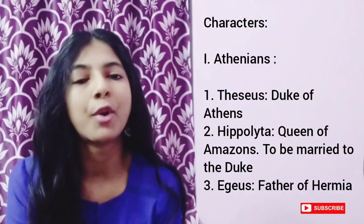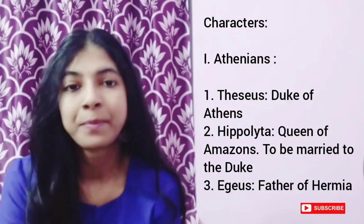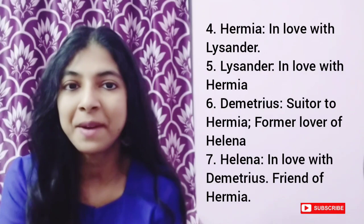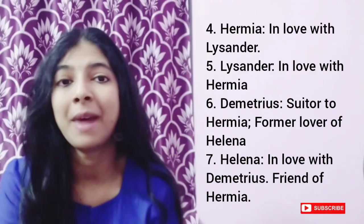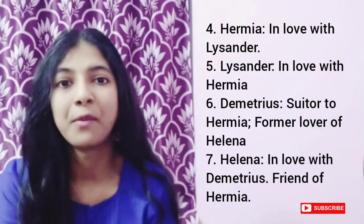As there are many characters in the play, we have divided the characters into three main categories for your convenience. The first category is Athenians, the noble people of Athens. We have Duke Theseus, who is the Duke of Athens; Hippolyta, Queen of the Amazons, who is to be married to Duke Theseus; Hermia, who is in love with Lysander; Lysander, who is in love with Hermia; Aegeus, who is Hermia's father and wants Hermia to marry Demetrius; and Demetrius, who is the suitor to Hermia.